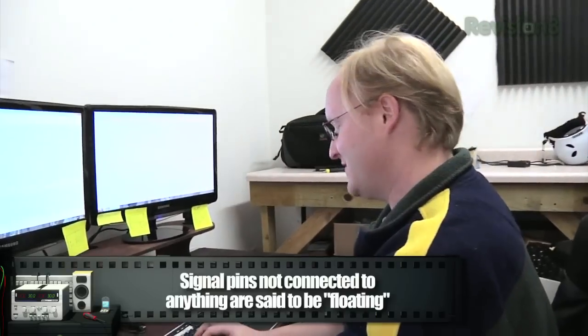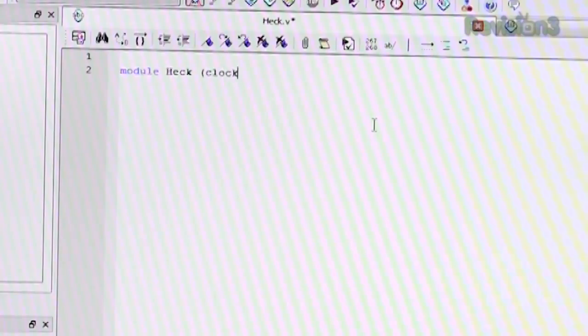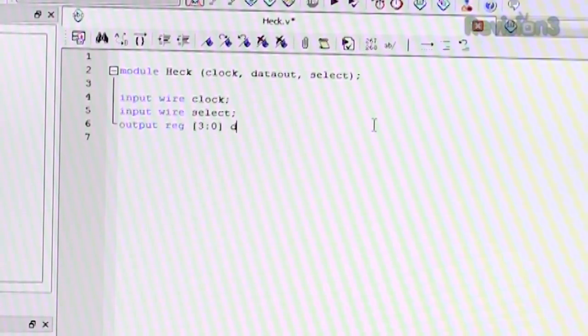All right, so we showed you an example using VHDL. Now we're going to show you an example using a slightly different programming language for these circuits called Verilog. Verilog is a little bit more conversational than VHDL and it looks more like a structured language like C. So we're going to start by making a module called HEC and then the input output on this is going to be clock, data out, and select. All right, now we need to say what each one of these wires are. So input wire is a clock. That's just one wire. Input wire select. And then the output, which is going to be the result of whatever, doing an output register, we'll call that, oh wait, let's make it four bits wide again. So three down to zero. And that's going to be data out.